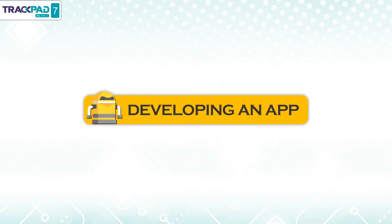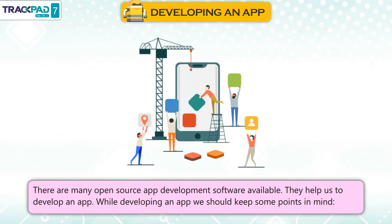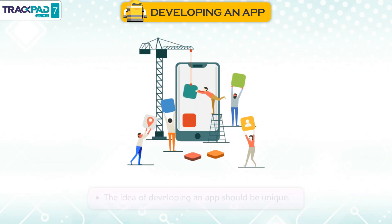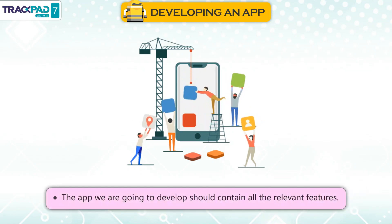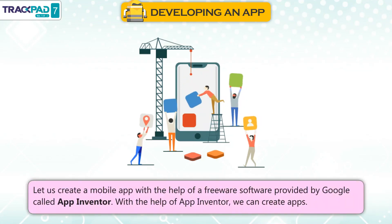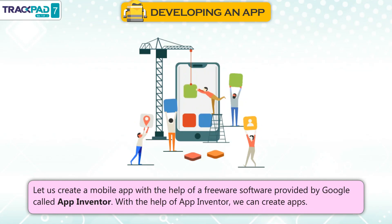Developing an App: There are many open-source app development software available that help us develop an app. While developing an app, we should keep some points in mind: the idea should be unique, the app should contain all relevant features, and the app should be user-friendly. We can create a mobile app with the help of freeware software provided by Google called App Inventor. With App Inventor, we can create apps.